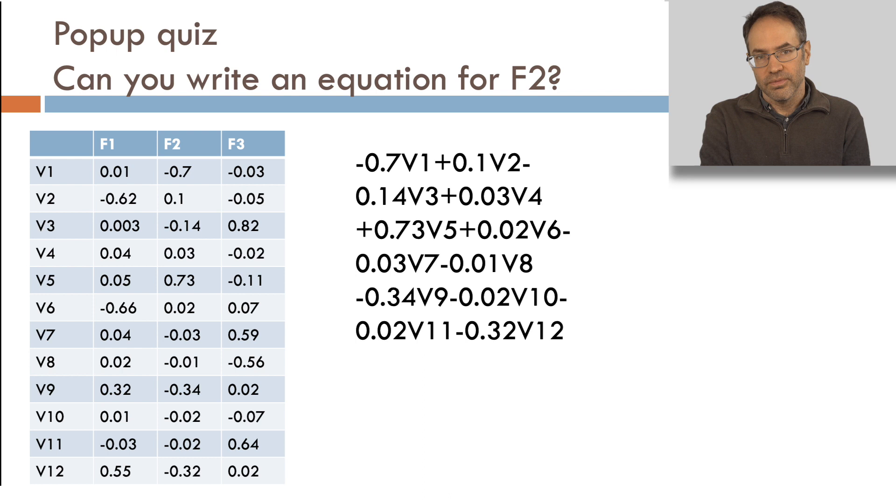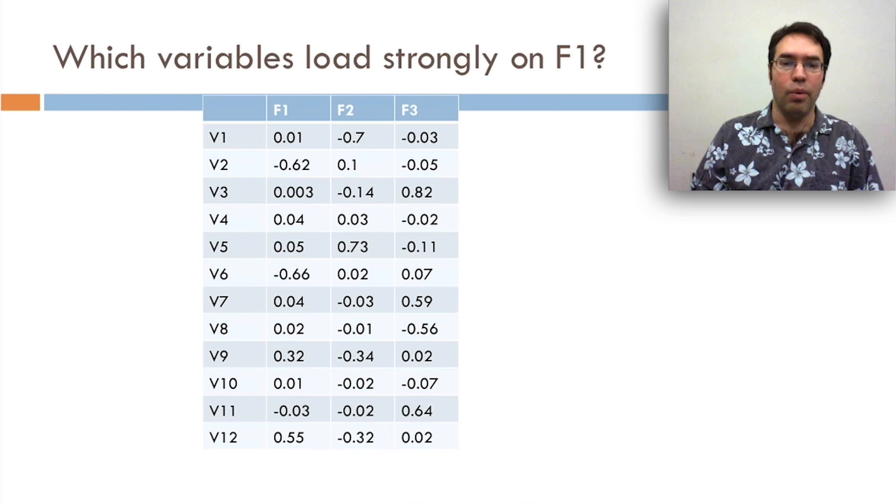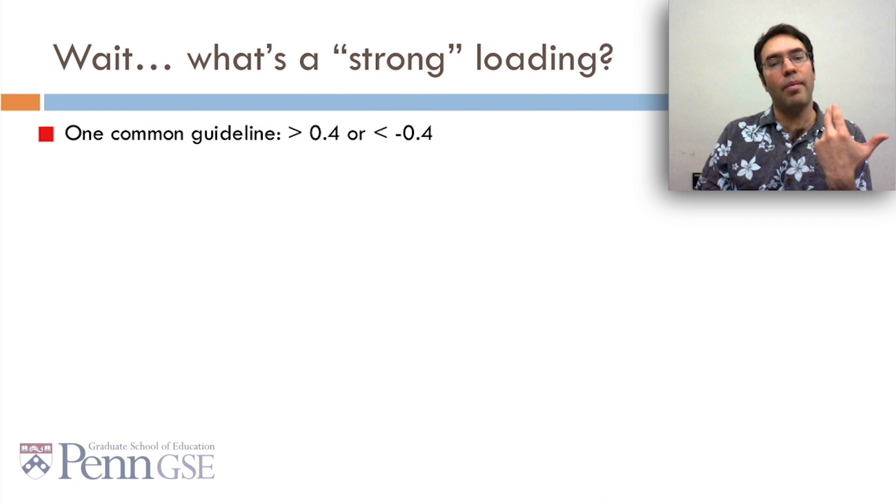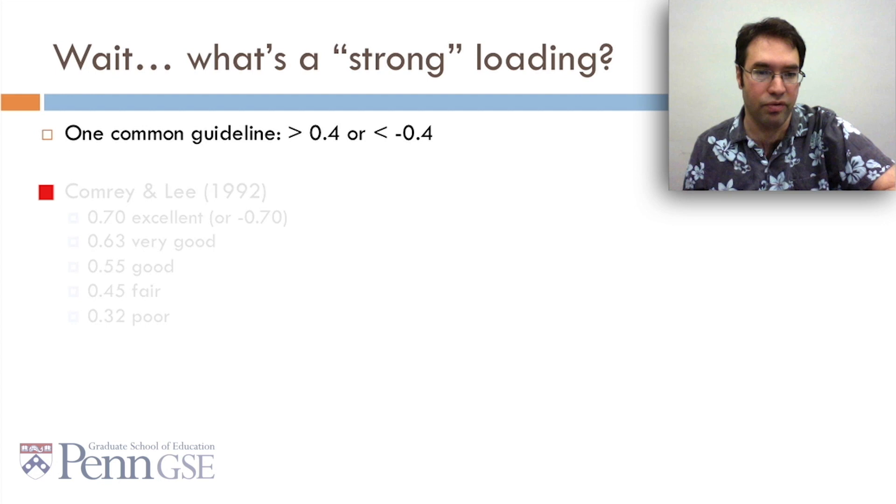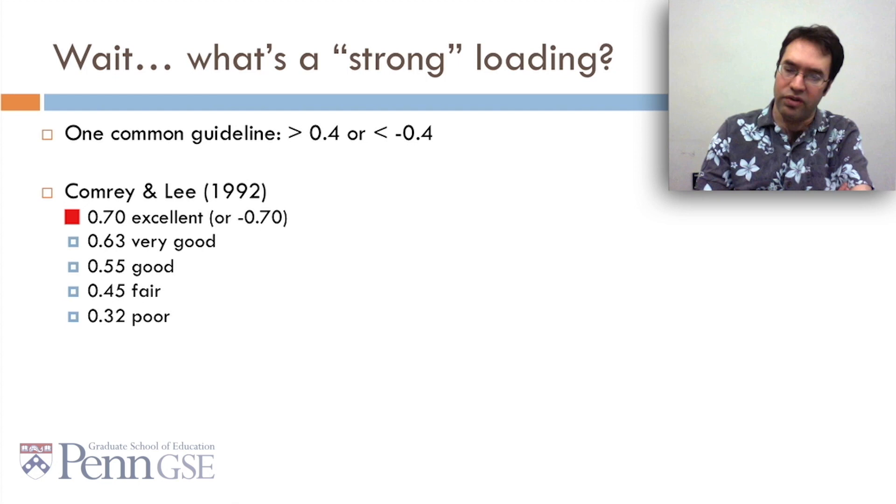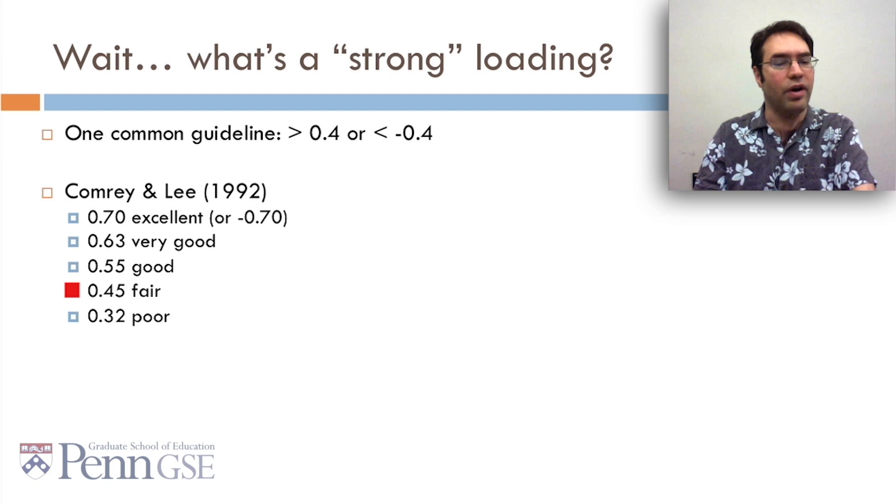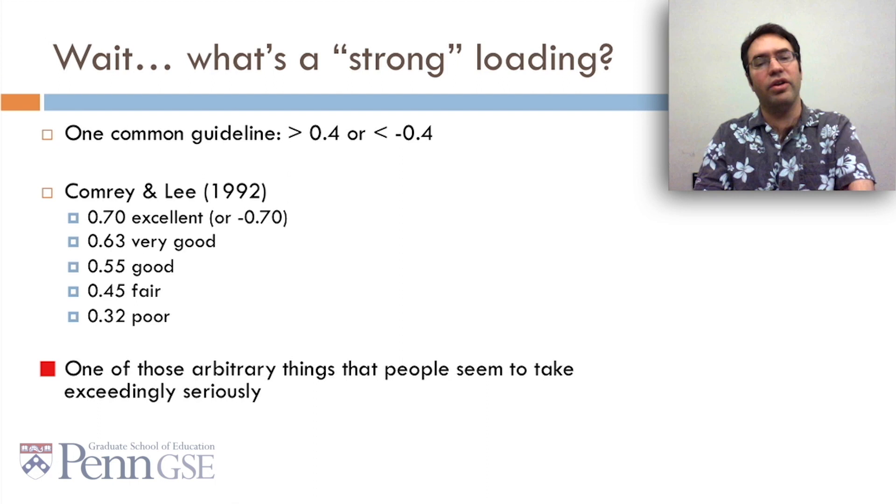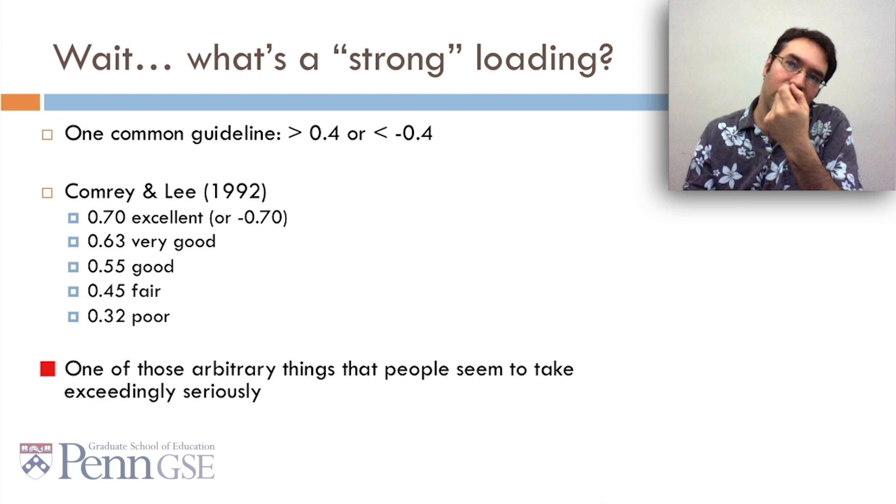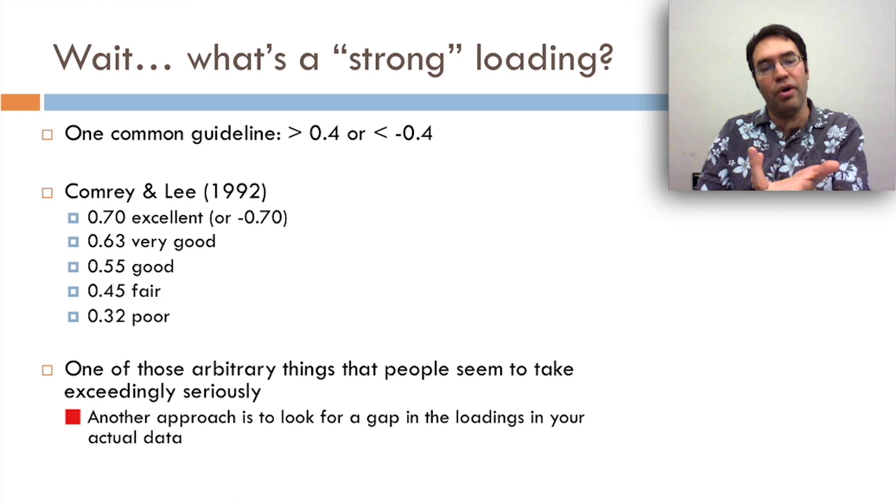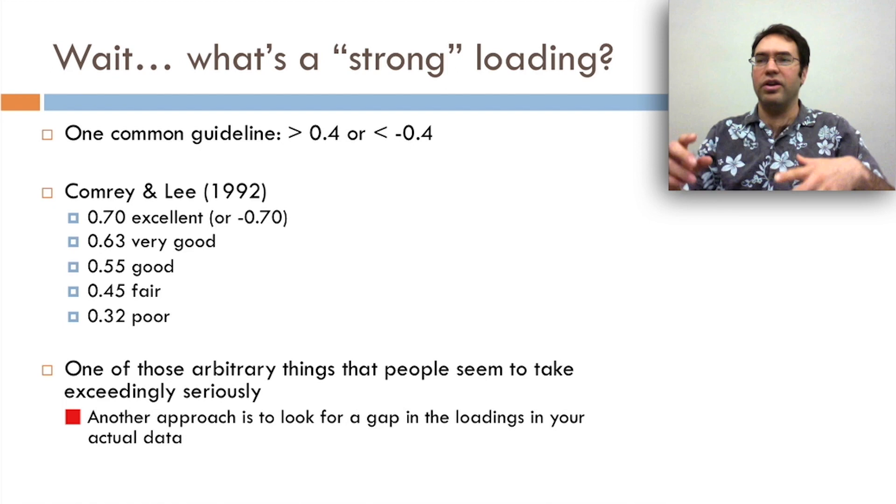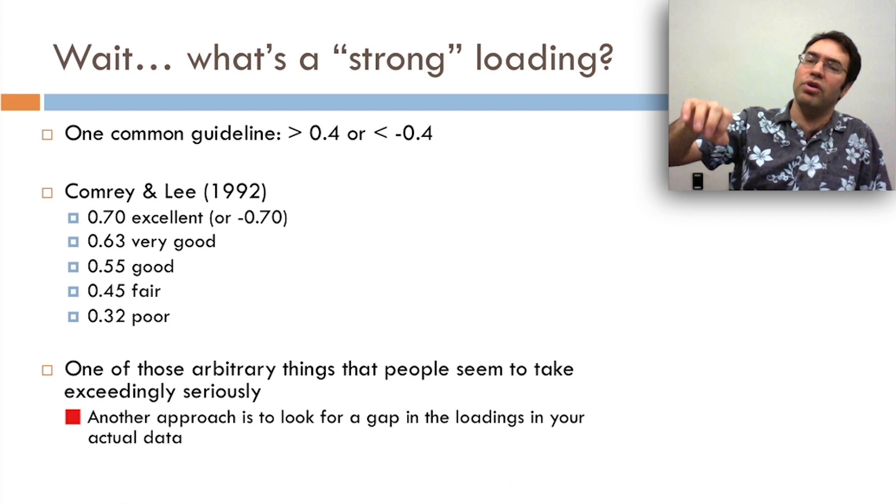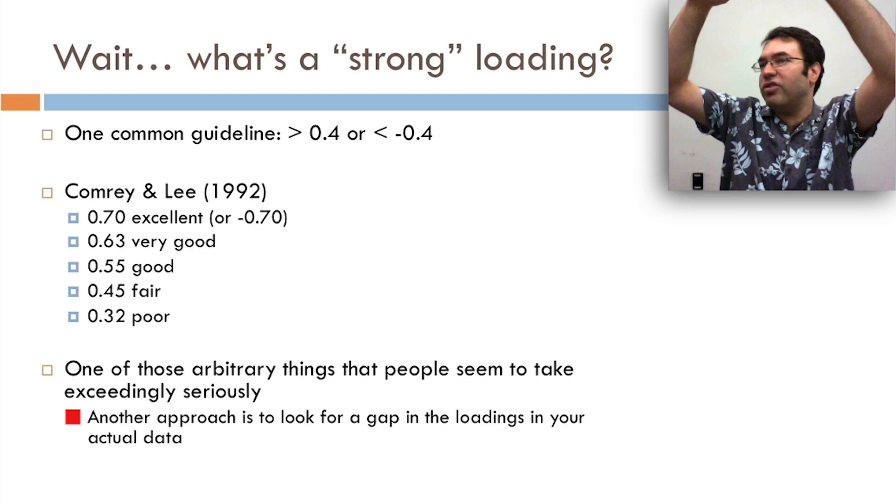So which variables load strongly on F1? Well, what's a strong loading? What's actually a good number here? One common guideline that people use is that a strong loading is above 0.4 or below negative 0.4. Cronbach and Lee say, well, 0.7 is excellent, or negative 0.7, and 0.63 is very good, and 0.55 is good, and 0.45 is fair, and 0.32 is poor. This is one of these arbitrary things that people seem to take exceedingly seriously. You know, is 0.41 really just wonderfully strong, and 0.39 is just junk? Another approach is to look for a gap in the loadings of your actual data. Like, rather than saying, 0.4 is really what I care about, you say, well, I've got a whole bunch here that are above 0.52, but then from 0.52 to 0.37, there's really nothing. Or maybe from 0.65, there's a bunch of stuff above 0.65, but then nothing down to 0.42. Maybe we don't want to include that 0.41, even though it's above 0.4, if everything else that's strongly loaded is above 0.65.